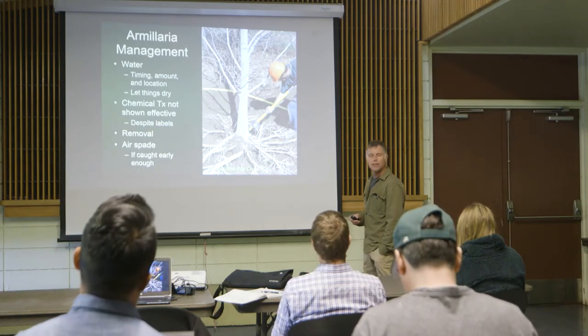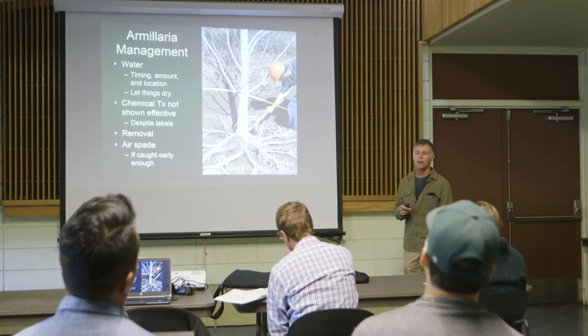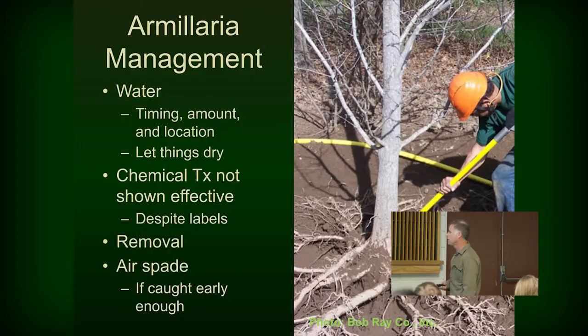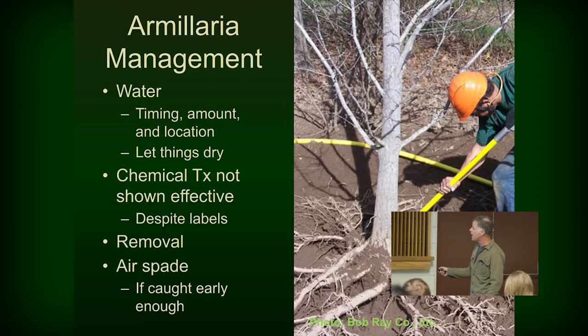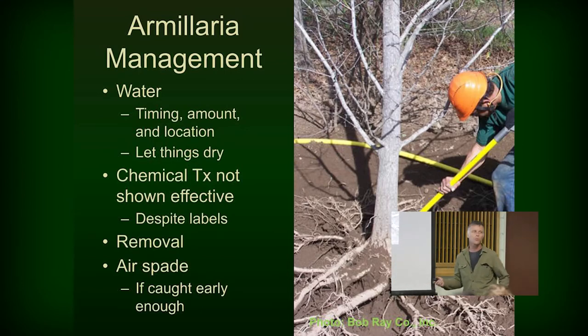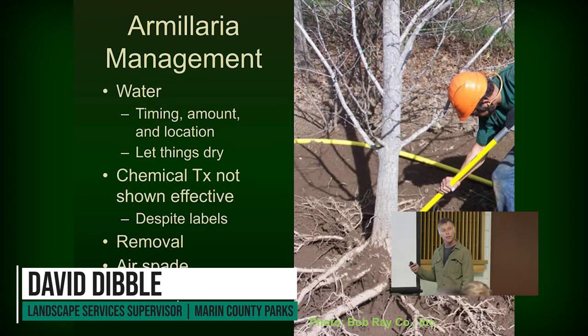Armillaria management is mostly about managing water. Armillaria likes things moist and warm in summer, so let soils dry out thoroughly between waterings — challenging on clay soils, but necessary. There are no chemistries shown to be effective despite what's on labels, except things already being banned like methyl bromide, which would kill your trees anyway. Your options are really removal or air spading. Air spading won't revive dead roots, but if you can dry things out and air spade enough, it can help the tree stop incipient infections from getting much worse. It can be worth a try on minimally infected trees.